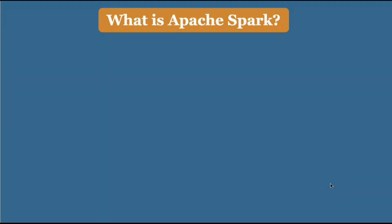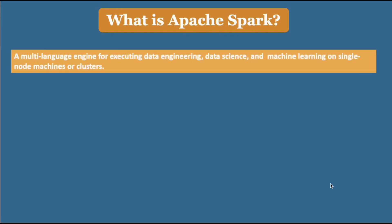So what exactly is Apache Spark? It is a unified engine for large-scale data analytics. The official definition from the Spark web pages: it's a multi-language engine for executing data engineering, data science, and machine learning on single-node or multi-node clusters.